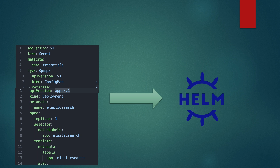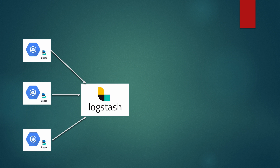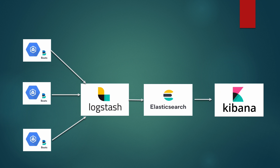In our tutorial today, we are going to learn how to install Elastic Stack using Helm. You're going to need these four components: Filebeat, responsible for collecting all the logs from the various pods and sending it to Logstash. Logstash aggregates all the logs and then sends it to Elasticsearch where they'll be stored and indexed, and then we can visualize it using Kibana.